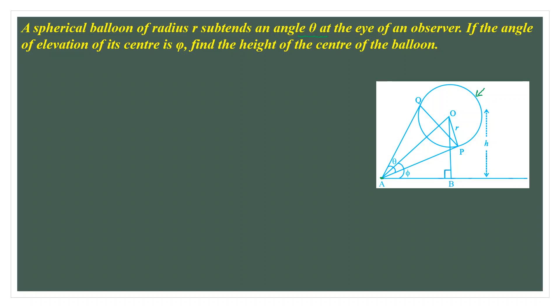There is an important theorem from the circle chapter: if you draw two tangents to a circle from a single point — like tangents AP and AQ from point A — then joining the center O to point A will always bisect the total angle at A. So if the whole angle is theta, each half will be theta by 2. This is what we need to remember before proceeding to the solution.